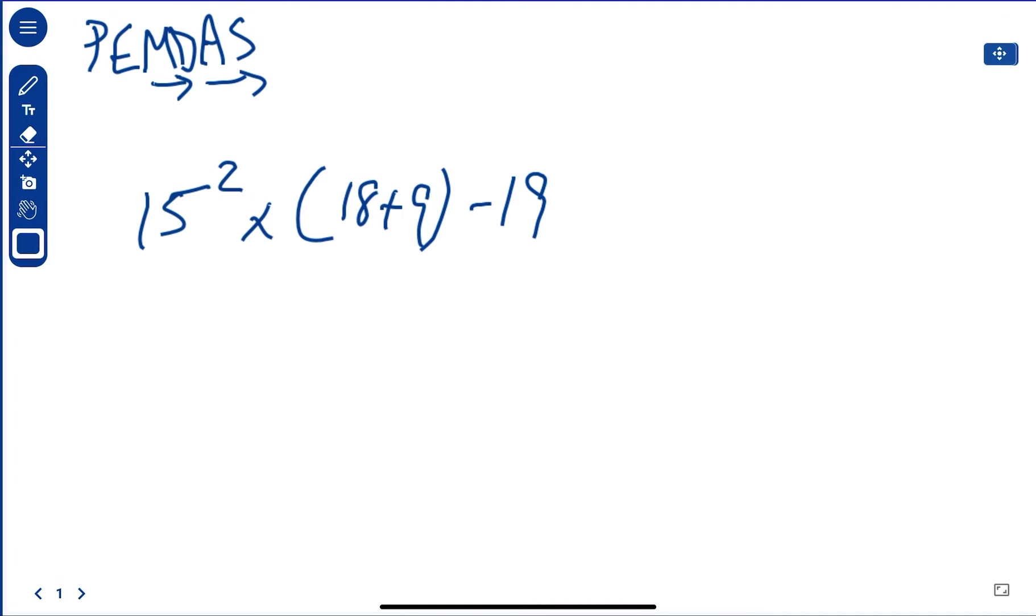Okay, so if we're following PEMDAS, we have to do what's inside the parentheses first. So we're going to say 27. Okay, because 18 plus 9 is 27. And then we're going to do our exponent here, 15 squared.